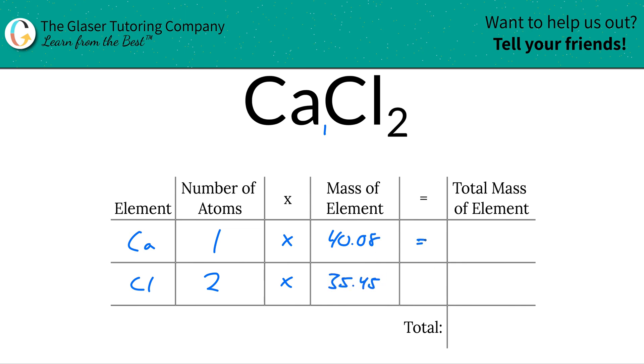And then to find the total mass of each element in the compound, we're simply going to multiply this row across. So for calcium, the total mass is 40.08. It works out to be the same as its molar mass or molecular mass, and the reason why is because there's only one atom.